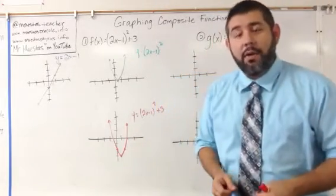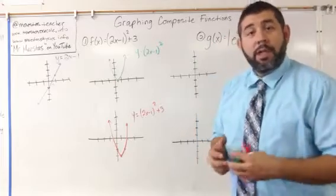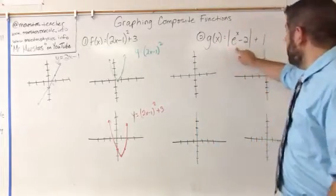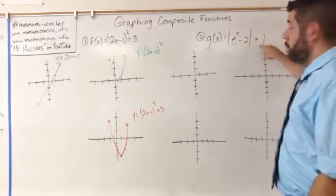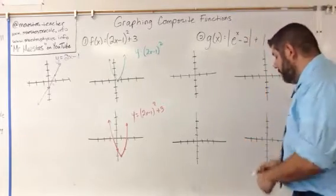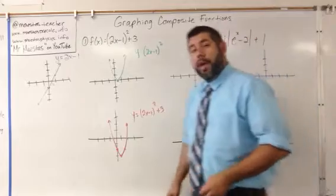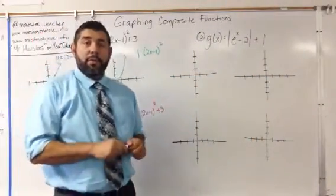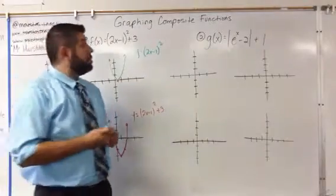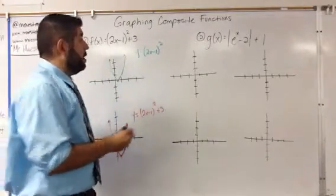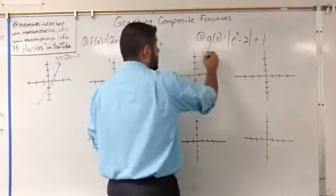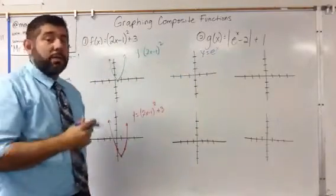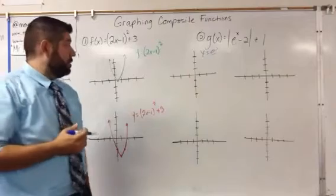Let's take a look at how that might work for something a little more complicated: the absolute value of e to the x minus 2, plus 1. We've been working with parent graphs — the 12 basic functions — and we're going to start with the parent graph of y equals e to the x, which is our natural exponential function.